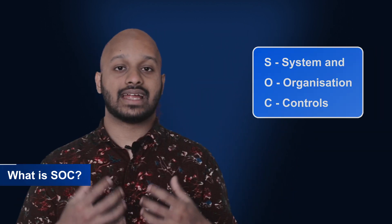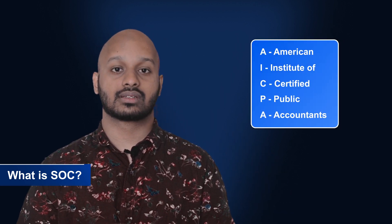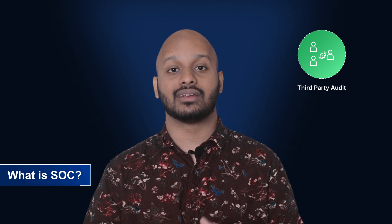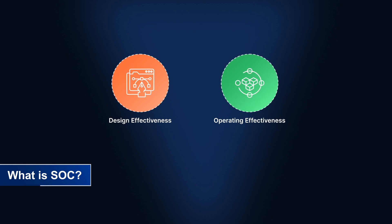SOC stands for System and Organization Controls and is a suite of services offered by the AICPA based on system-level controls at service organizations. The AICPA, also known as the American Institute of Certified Public Accountants, created SOC so organizations could create stakeholder trust by volunteering themselves to an independent third-party audit. A SOC report is what you get after this audit, after the design and operating effectiveness of your controls have been ascertained by auditors. If you do a good job of implementing these controls, you get a report that says so.